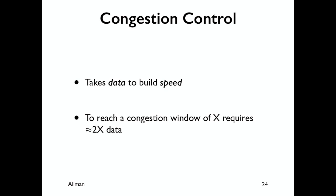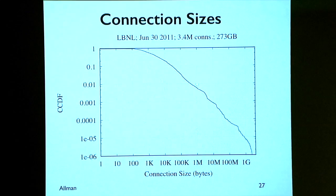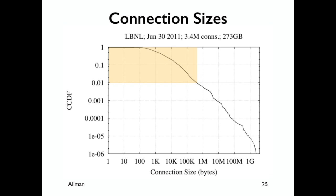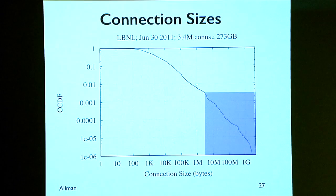Two megabytes might not sound like a lot. I looked at how big connections actually are — this is connection sizes at Lawrence Berkeley Labs. These plots are always heavy-tailed. This is a log scale on the x-axis of connection sizes and a CCDF on the y-axis. 99% of the connections are less than 200 or 300 kilobytes. Remember we need about two megabytes of data to get a one megabyte window — well, the set of connections that send at least two megabytes is much less than 1% of connections. Not a good story for general high-bandwidth use.